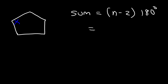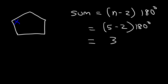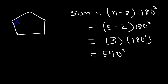In a pentagon there are 5 sides, so n is 5. So the first thing you want to do is subtract 5 by 2, which is 3. And then take that number and multiply it by 180 degrees. So the sum of all five angles in a pentagon is 540 degrees.